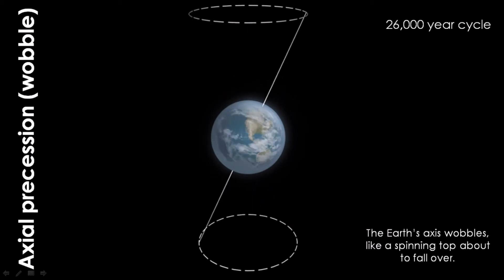Axial precession makes seasonal contrasts more extreme in one hemisphere and less extreme in the other when it occurs. It also gradually changes the timing of seasons, causing them to begin earlier over time and gradually changes which star the Earth's axis points to at the North Pole. The reason for axial precession is because the Earth is not a perfect sphere. So as the Earth spins, it wobbles on its axis, and this takes place over a cycle period of about 26,000 years.